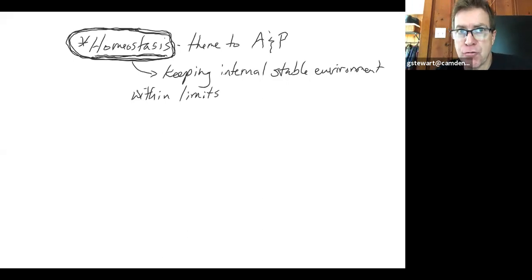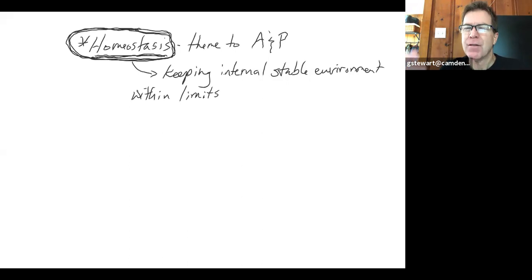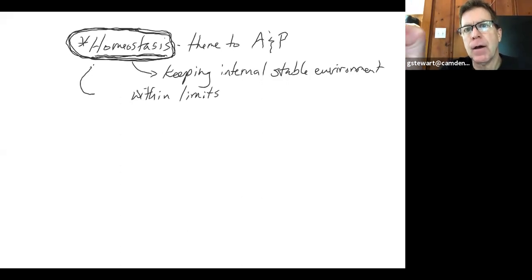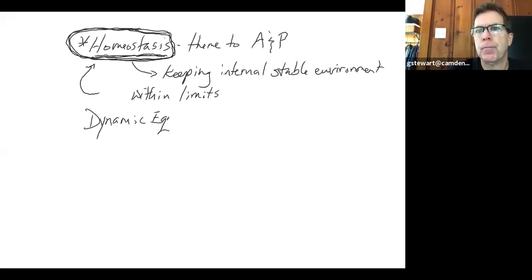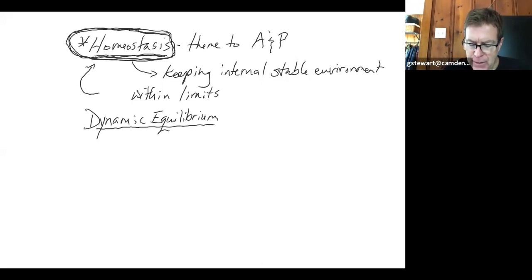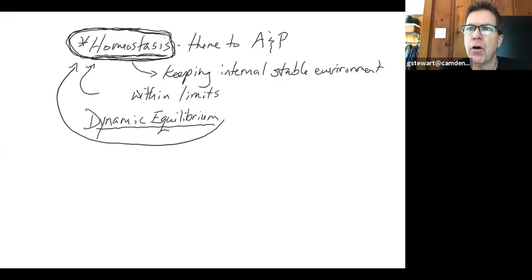Likewise, if our body temperature drops by a few degrees, it can be dangerous and life-threatening. Temperature regulation is just one tiny example of what goes on to maintain a stable internal environment. The term dynamic equilibrium — or dynamic state of equilibrium — describes the varying conditions within the human body as it tries to maintain the goal of homeostasis. Homeostasis is the theme and goal of everything going on inside the human body to stay healthy.